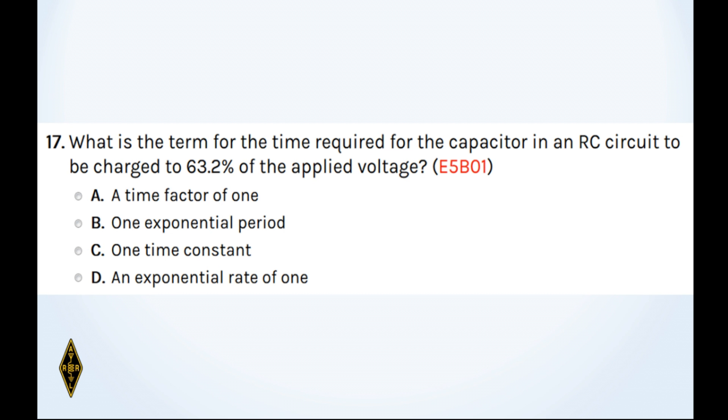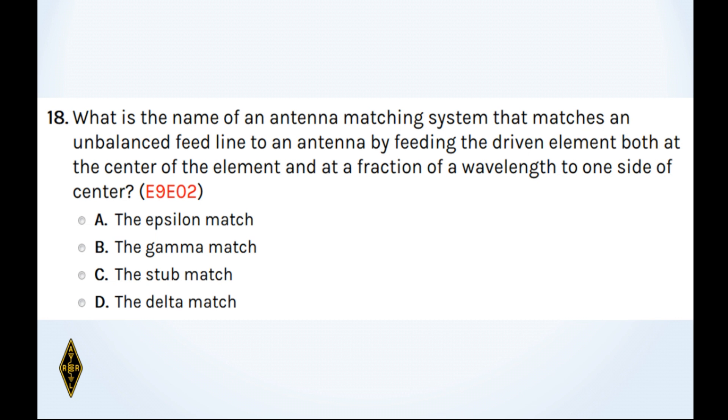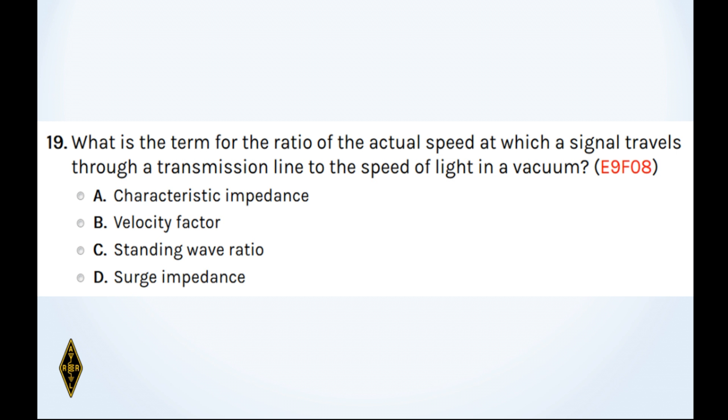And 18, what is the name of an antenna matching system that matches an unbalanced feed line to an antenna by feeding the driven element both at the center of the element and at a fraction of a wavelength to one side of the center? And 19, what is the term for the ratio of the actual speed at which signals travel through a transmission line to the speed of light in a vacuum?